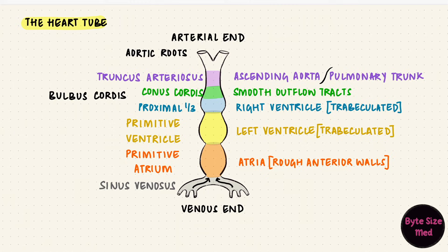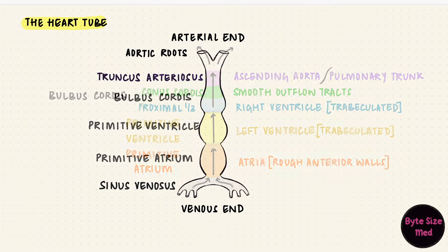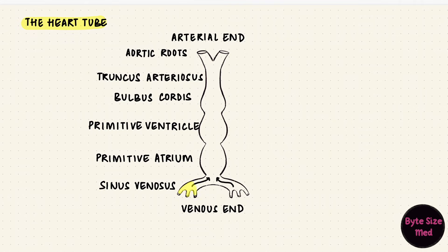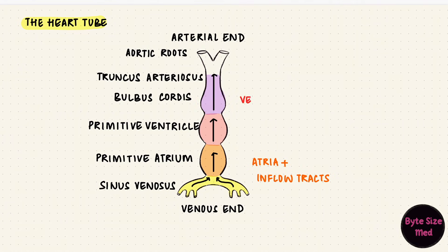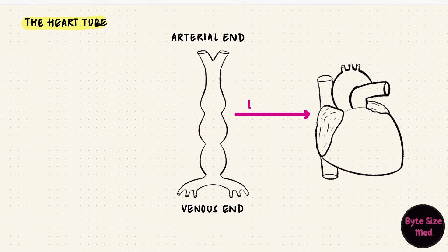Now let's see the path that blood takes through the heart tube. It starts at the venous end, from the sinus venosus into the primitive atrium. The next structures on the path are the primitive ventricle, the bulbus cordis, and the truncus arteriosus, after which blood gets pumped out of the arterial end. This heart tube has to go from looking like this to that, and that happens by a process called cardiac looping.